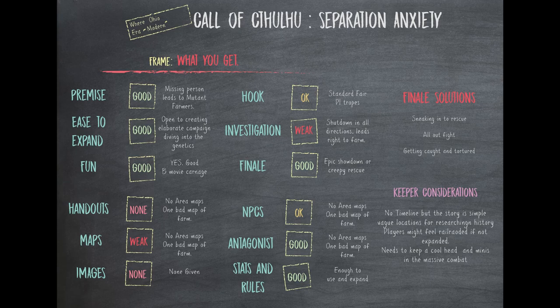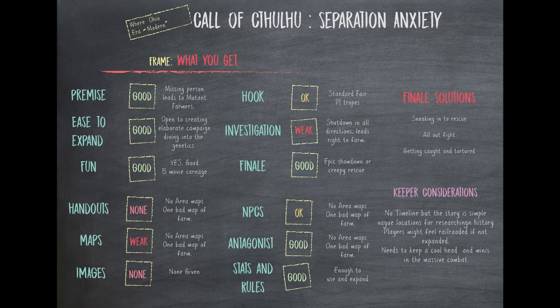The scenario is quite thin on investigation — it essentially shuts down a lot of avenues straight out the back, and this is where you have to expand the game quite a bit if you want a full 4 or 5 hour session. Essentially, no one has seen how she was abducted, the CCTV cameras are off, and there's not a lot of leads on how to find her other than her own research, which you find on her computer. It does give you information about the internet — things like that, which is useful, since a lot of modern scenarios don't really account for cell phones, Google, and the internet. There are no other locations and no map given outside of the main event.